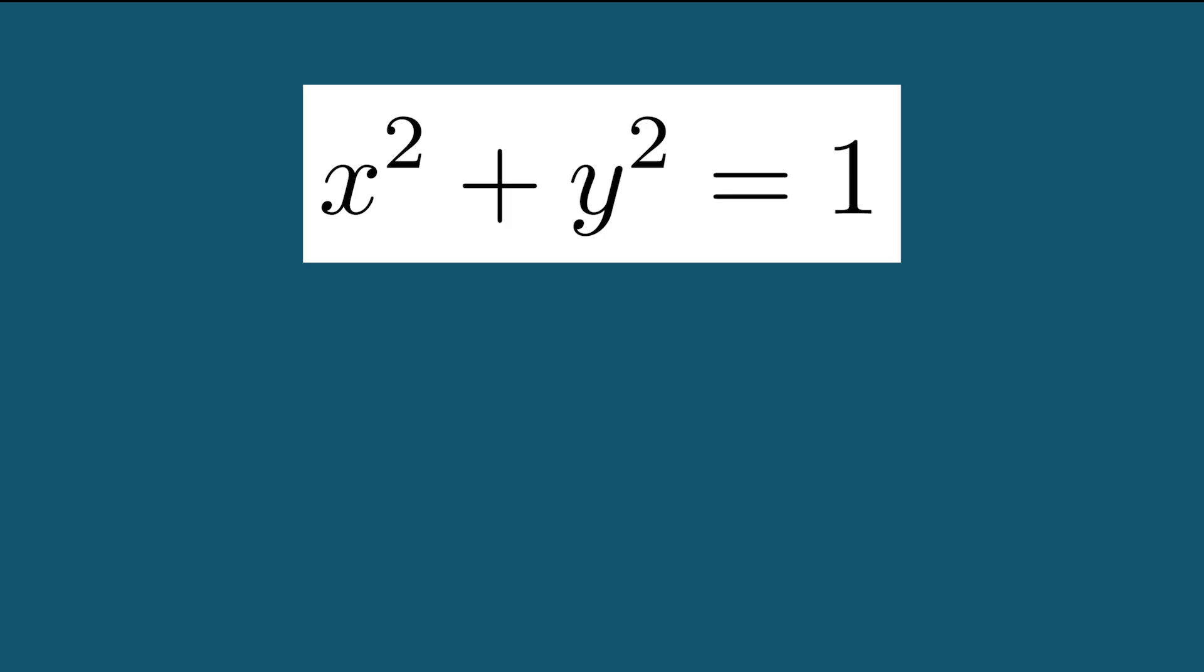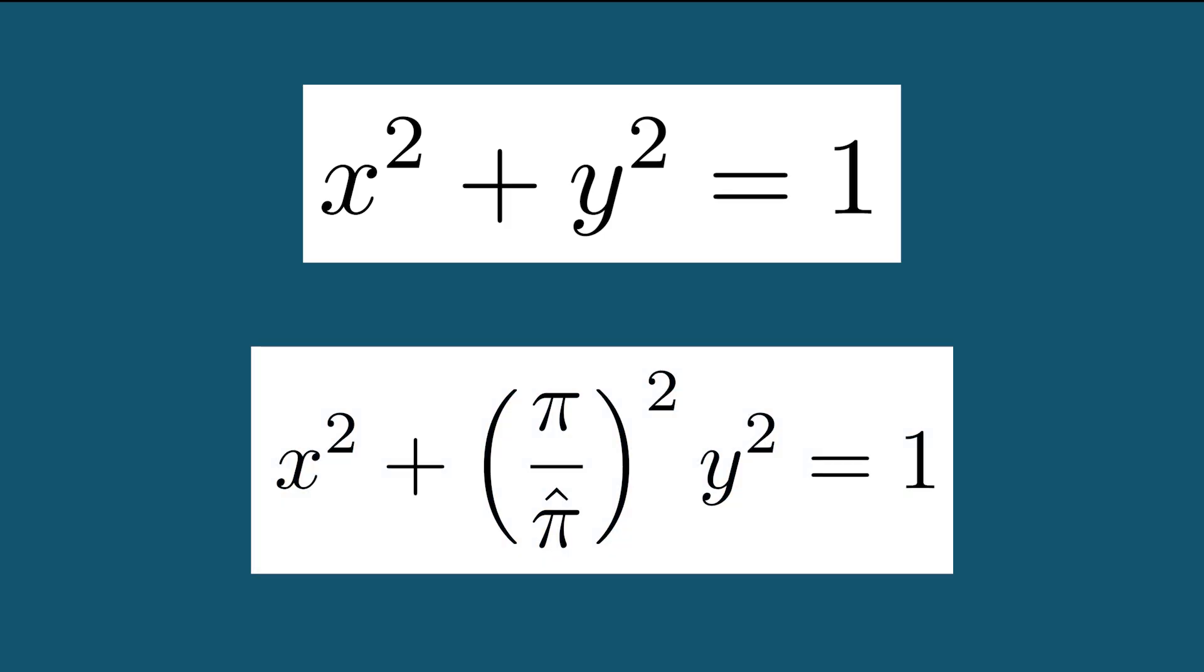We can make this more general using something called a Mahalanobis distance to see how pi hat fits in. When we choose a value of pi hat that is not equal to pi, we get an equation of an ellipse when we plug in our Mahalanobis metric.